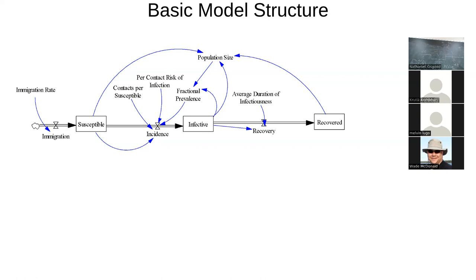You can have a loop in the model as a whole — for example, infective to population size to fractional prevalence to incidence back to infective — but it's through a stock and flow, which is fine. The stocks capture the state of the system. However, you cannot have instantaneous loops where A depends on B and B depends on A. These are the kind of syntactic rules governing the grammar of stock-and-flow diagrams.